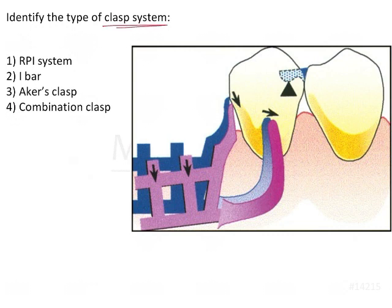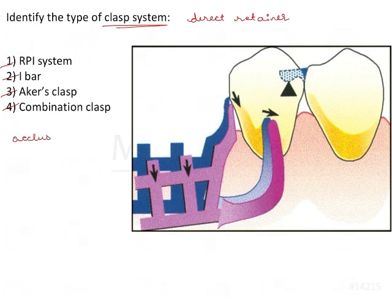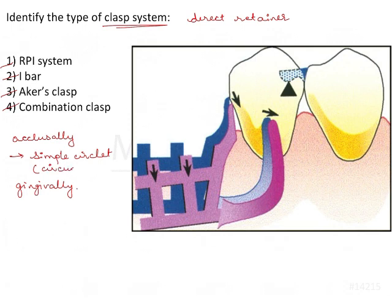Identify the type of clasp system, which means identifying the direct retainer. The options are RPI system, I-bar, acres clasp, and combination clasp. Direct retainers are classified as occlusally approaching or gingivally approaching. Occlusally approaching includes the simple circumferential clasp and its varieties, while gingivally approaching clasps are the roach clasps — I-bar, Y-bar, T-bar, and their modifications.